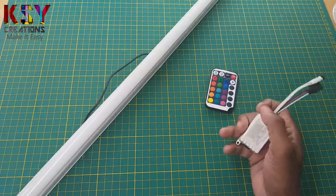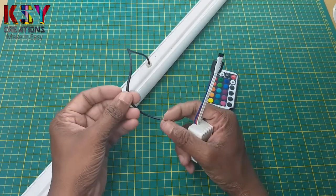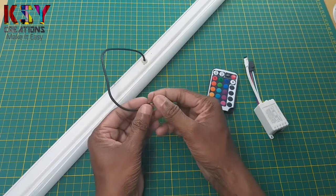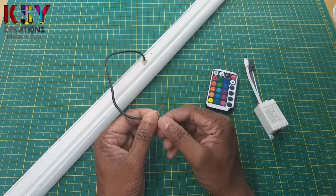If we want, we can connect this tube light to RGB controller. Simply we have to connect these wires to this controller. In this tube light, this red one is the positive, red blue and green these three are the negative terminals.